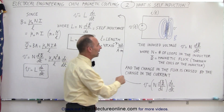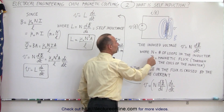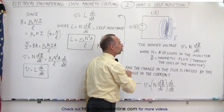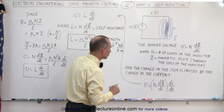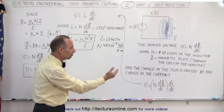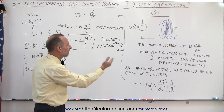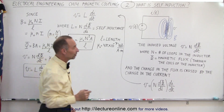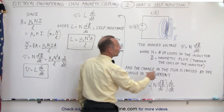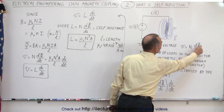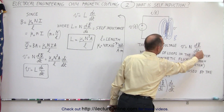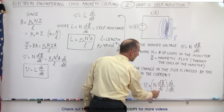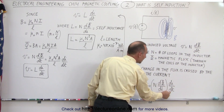So N is the number of loops, and Φ is the magnetic flux through the coils of the inductor. The change in the flux is caused by the change in the current. If we change this equation, we write dΦ/dt as dΦ/di times di/dt.